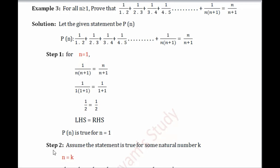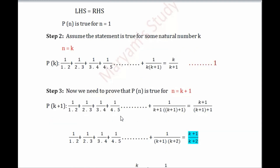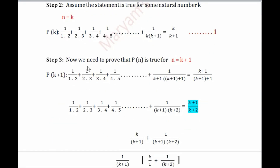Step 2: we assume that the given statement is true for other natural numbers as well. Let that be k, so we replace all n by k. This gives us P(k), where all n's are replaced by k. We label this as equation 1, because we use this P(k) in Step 3. This step is all about assumption.